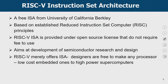RISC-V instruction set architecture is a free ISA from the University of California, Berkeley. It is based on established RISC principles — reduced instruction set computer — and the load-store architecture, which we already learned. The RISC-V ISA is provided under an open-source license, so we do not require a fee to use it. It also aims at development of semiconductor resources and design. RISC-V merely offers the ISA only, so designers are free to make any processor — from low-cost embedded ones to high-end supercomputers — by making use of this RISC-V ISA.